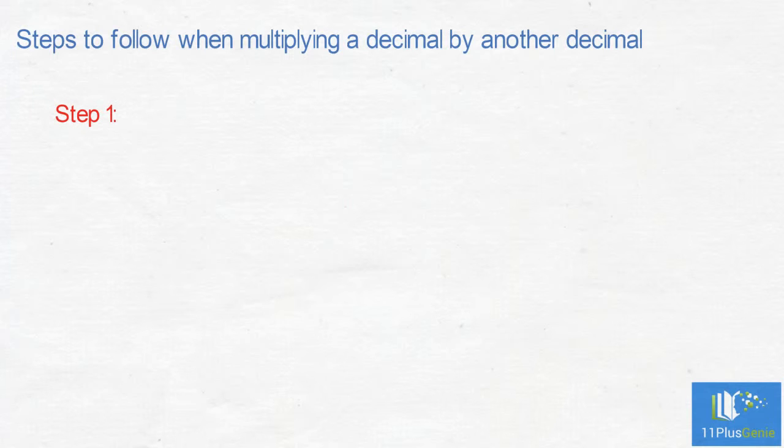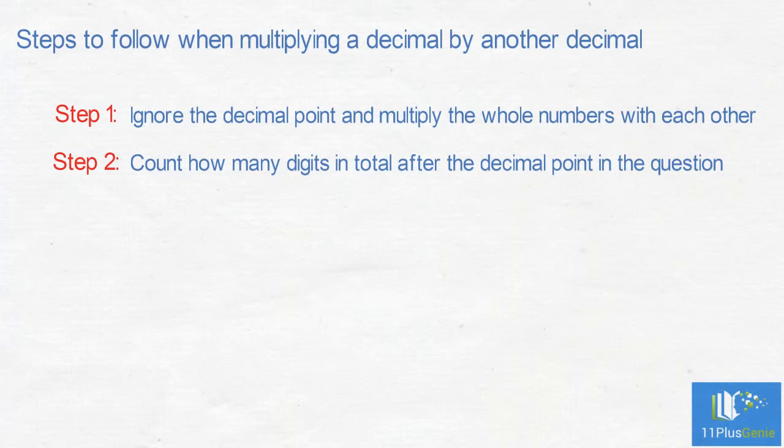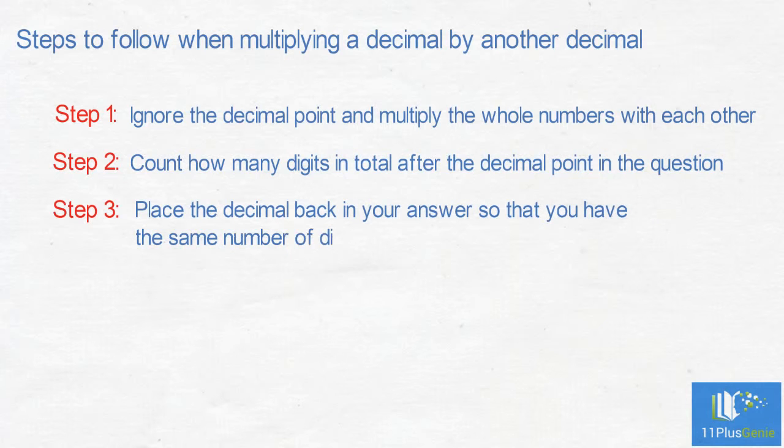Step 1: Ignore the decimal point and multiply the whole numbers with each other. Step 2: Count how many digits in total after the decimal point in the question. Step 3: Place the decimal back in your answer so that you have the same number of digits after the decimal point.